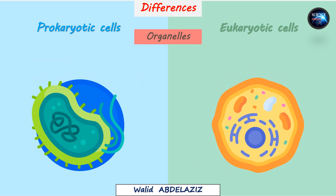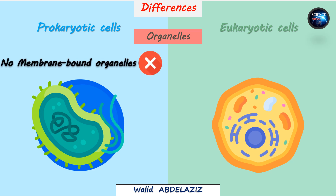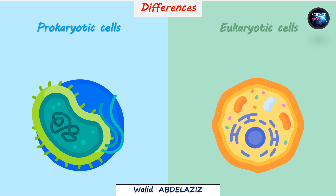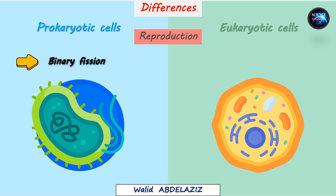When it comes to organelles, prokaryotes don't have membrane-bound organelles, meaning they lack structures like mitochondria or chloroplasts. Eukaryotes, however, have these organelles, which help them perform more specialized functions. In terms of reproduction, prokaryotic cells reproduce through a simple process called binary fission, while eukaryotic cells use mitosis or meiosis.